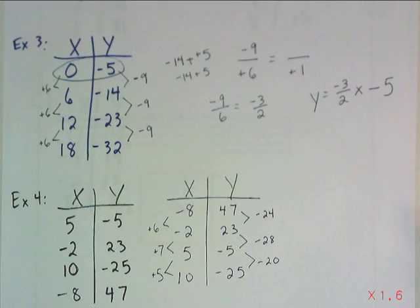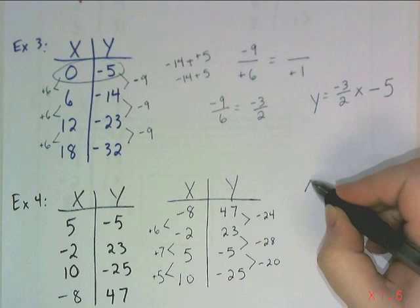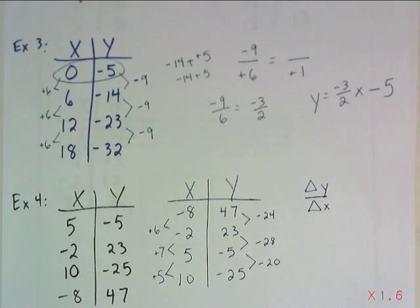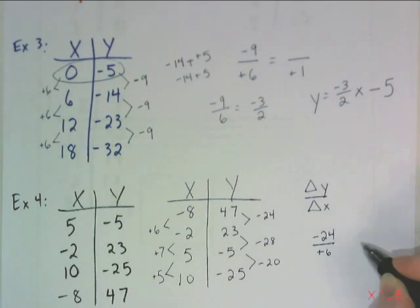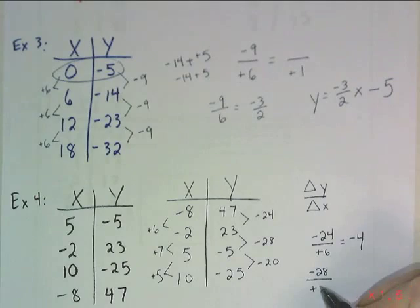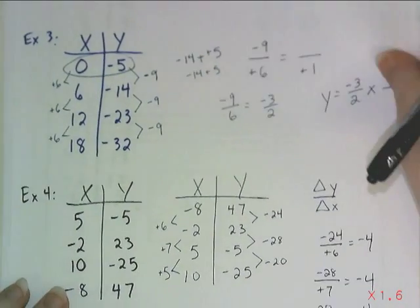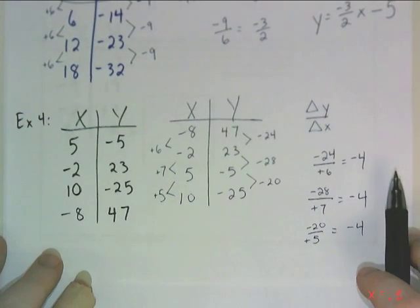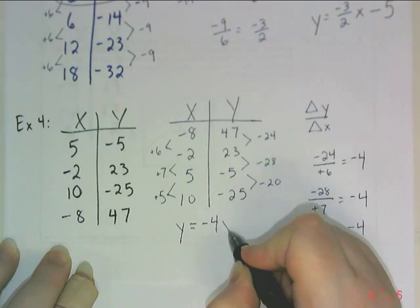I can take any one of those opposite pairs of bug arms and find my rate of change. Even though the individual differences don't look constant, because this is linear, the rate of change will always work out the same. Rate of change is change in y over change in x. For the first pair: negative 24 over positive 6 simplifies to negative 4. The next pair: negative 28 over positive 7 also gives negative 4. And negative 20 over positive 5 likewise simplifies to negative 4. So my rate of change is negative 4, making the coefficient of x negative 4.